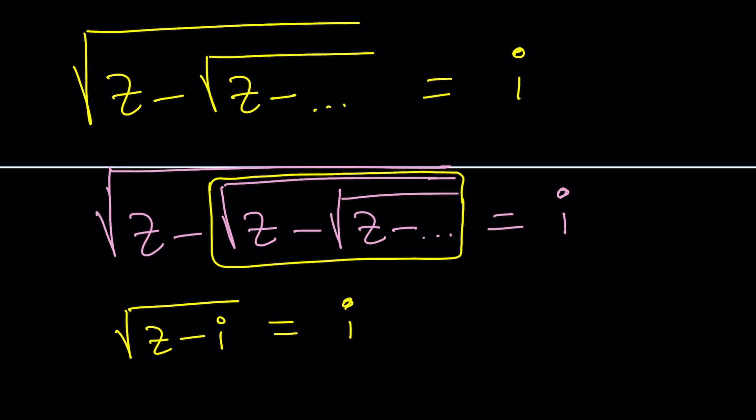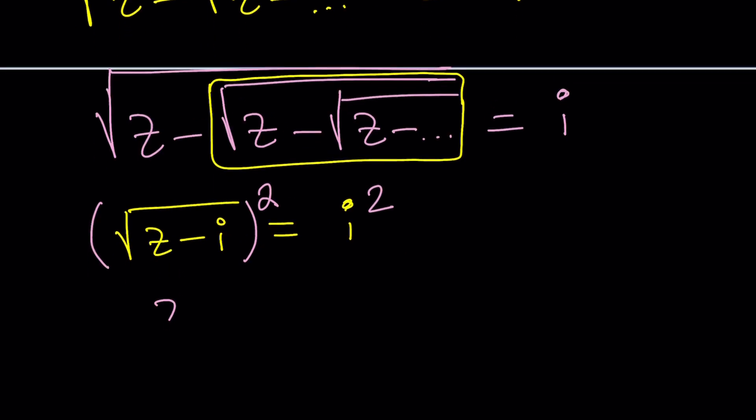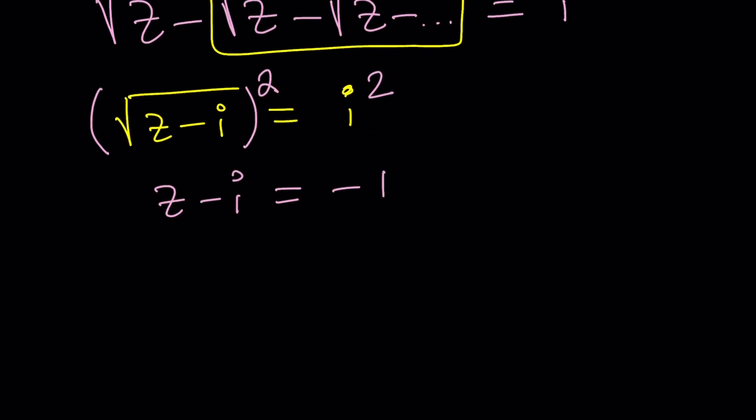To be able to solve this equation, I'm going to square both sides. Make sense? And then this will give me z minus i equals i squared, which is negative one. And then I will add i to both sides. And that will give me negative one plus i. Great.